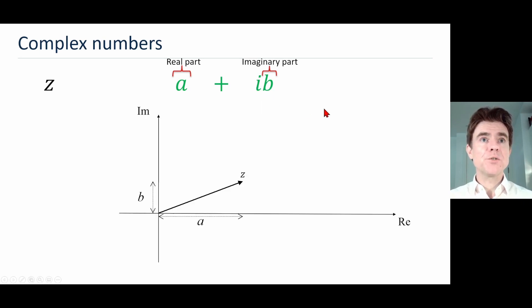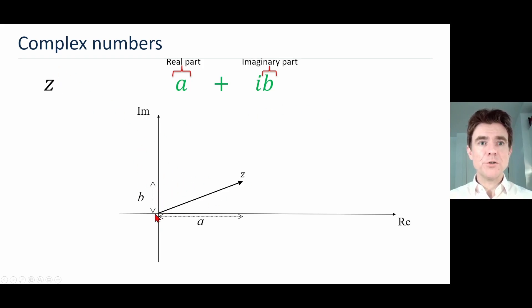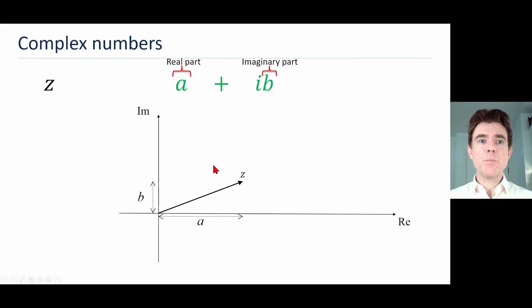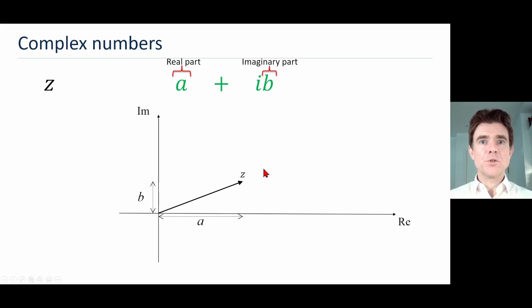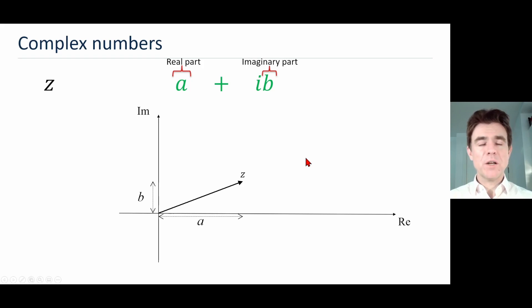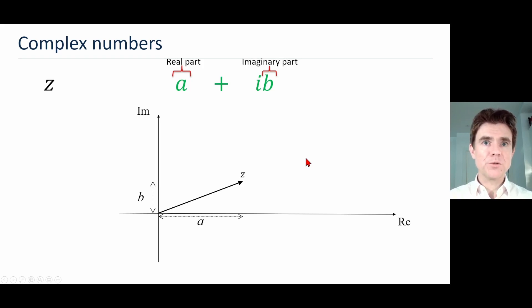We can plot this on an Argand diagram, or the complex plane. Here's z, the complex number — it's got the real part a along the real axis and the imaginary part b along the imaginary axis. That's how we can illustrate any complex number z composed of those two components.